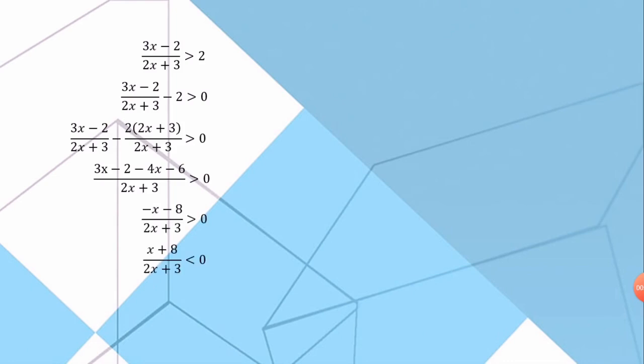As for the first step, we need to bring the number 2 to the left hand side to make our solution much more easier. As for our second step, we need to make the denominator equal. As for the third step, we need to simplify the inequality. So, our answer will be (x + 8)/(2x + 3) less than 0.